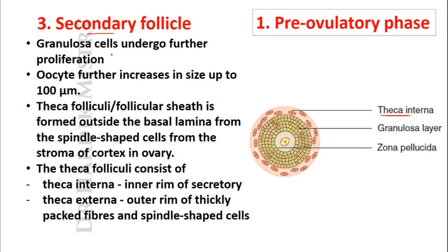In the secondary follicle, granulosa cells undergo further proliferation and the oocyte further increases in size up to 100 micrometers. Outside the basal lamina, the theca follicle or follicular sheath is formed by spindle-shaped cells from the stroma of the ovarian cortex. The theca follicle consists of theca interna — the inner secretory rim — and theca externa, the outer rim of thickly packed fibers and spindle-shaped cells. At this stage the follicle is known as the secondary follicle.